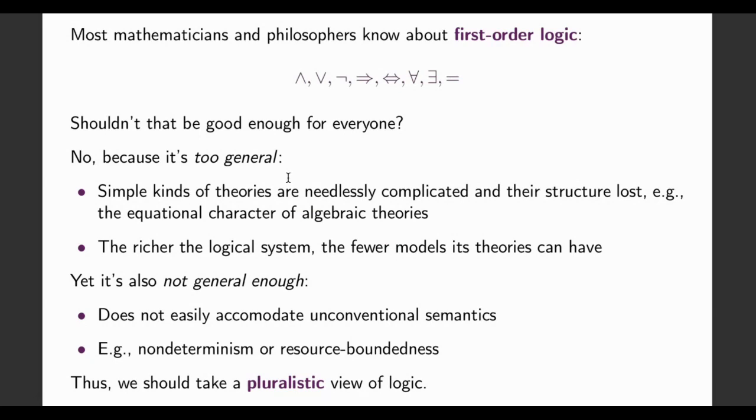Most mathematicians and philosophers and computer scientists know something about first-order logic with these familiar connectives. So if everyone knows about this, shouldn't that be good enough for everyone? And I want to argue that no, it's not. And there's actually several reasons why this is the case.